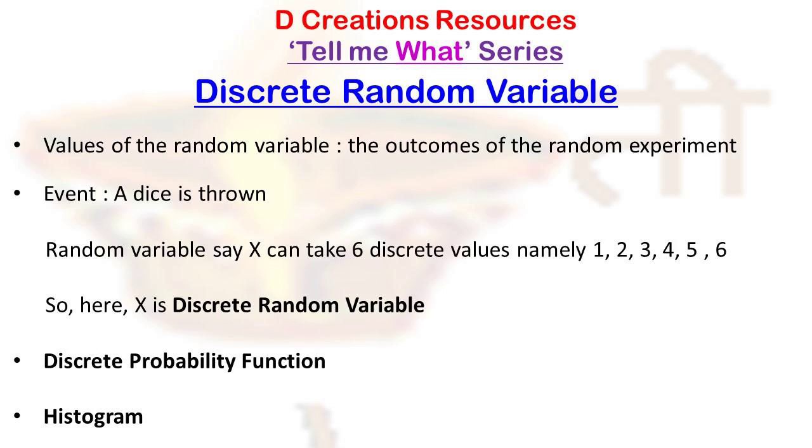We need to locate the values of the random variable on a number line. Then above each number, you create a rectangle with width 1 and height equal to the probability associated with that value of the random variable. So the rectangle will have the highest height if the probability is largest.